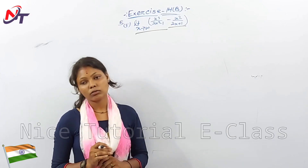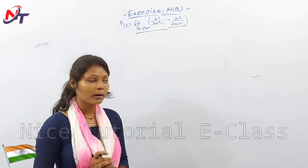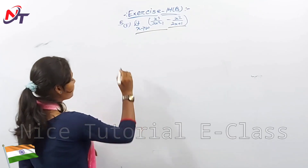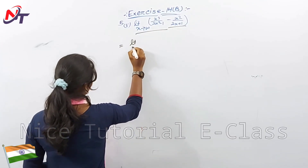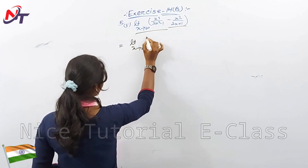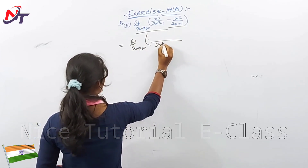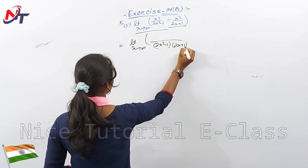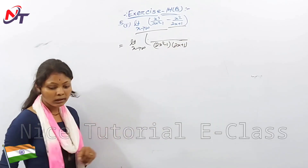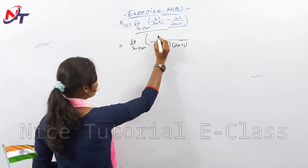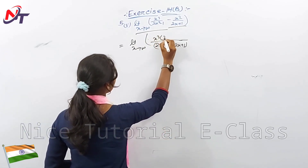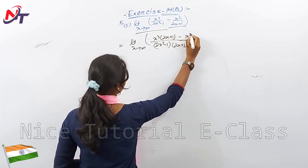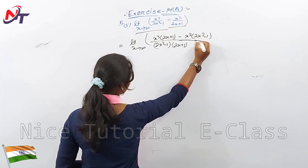We need to evaluate it. What do we do first? We take the difference — fill in the LCM first. The LCM is (2x² minus 1) into (2x plus 1). So the numerator becomes: x³ into (2x plus 1) minus x² into (2x² minus 1).